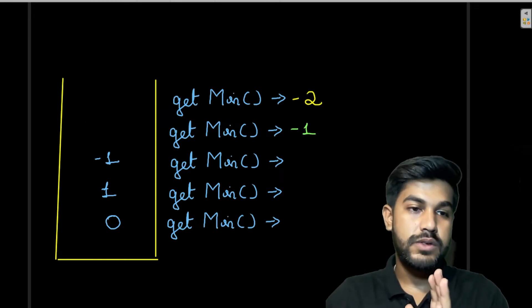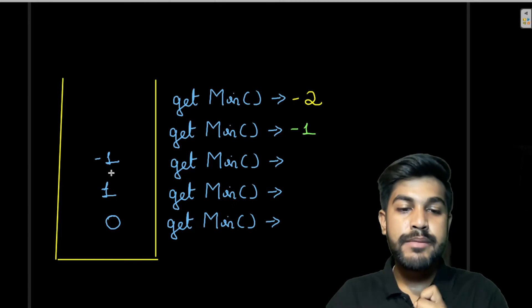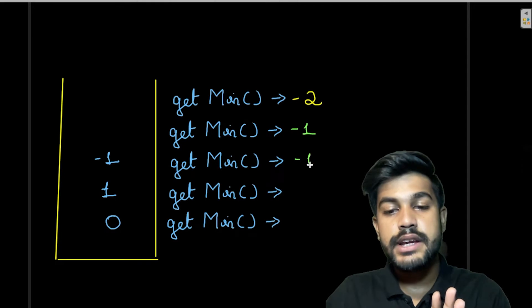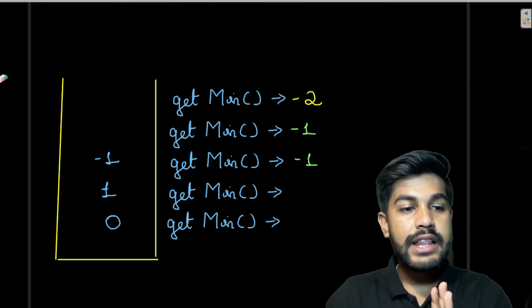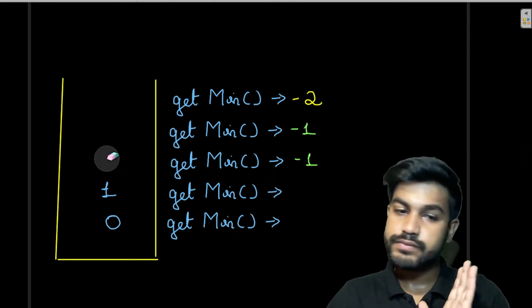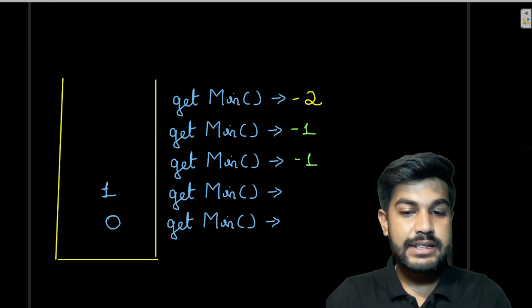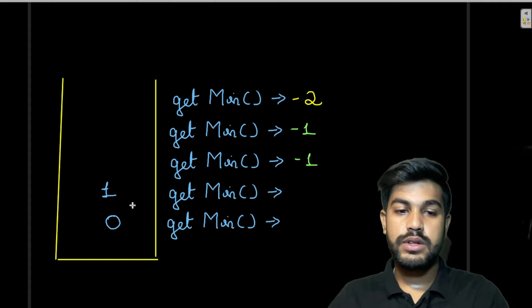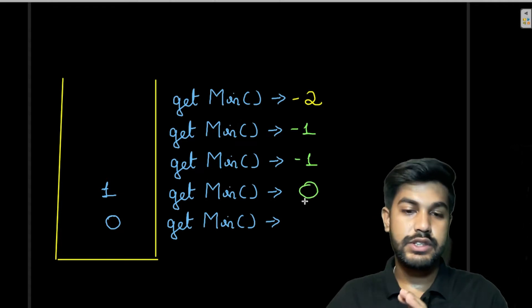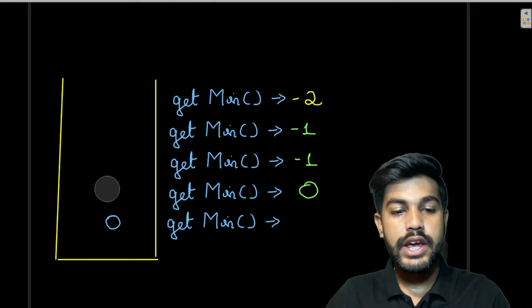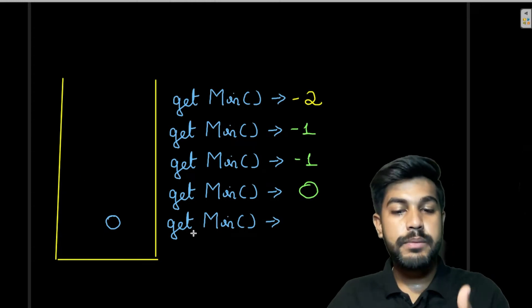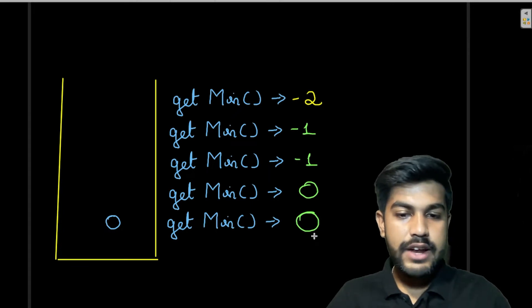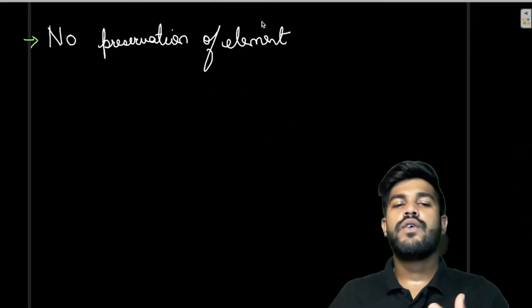We pop out 3 as well, and we still have -1, 1, 0 — the minimum is still -1. Then we remove -1 too. Next, get_min on 1, 0 returns 0 as the minimum element. We remove 1, leaving only 0, which is the minimum of itself.